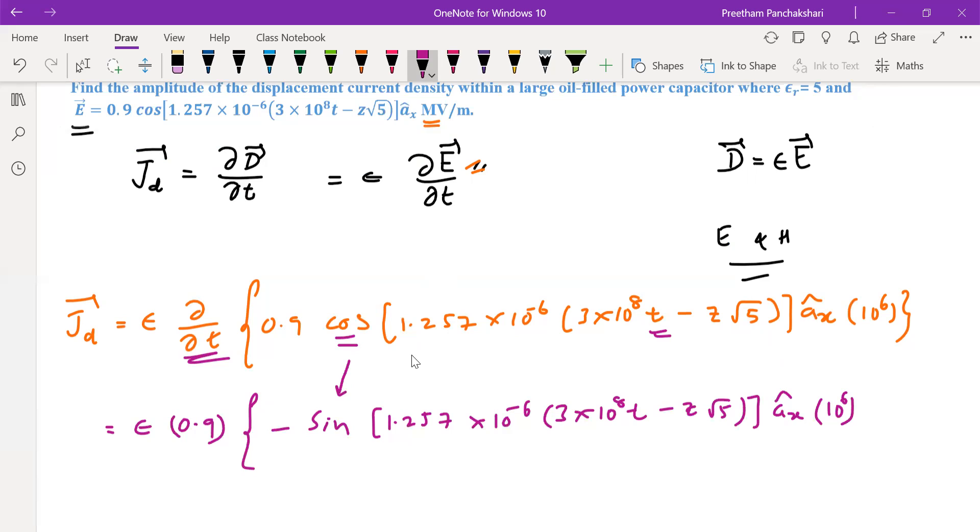Now we have to differentiate this argument with respect to t. This part is 0, it is not containing t. So differentiation of this part 3×10⁸t is 3×10⁸ into this value.